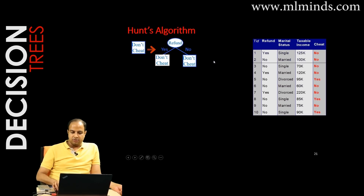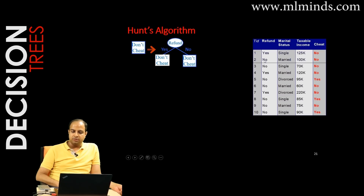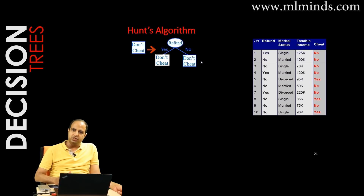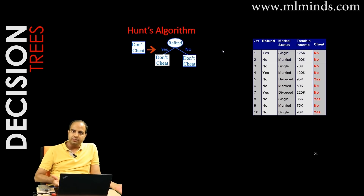Three instances went to the left and seven to the right. Of those seven, three are yes and four are no — that's a mix, so the right child is an impure node. Impure nodes need to be split further; pure nodes don't, since a decision has already been made.